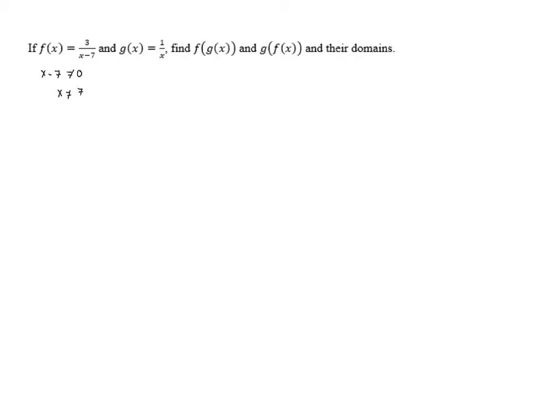For g of x, we need to make sure the denominator doesn't equal 0. In this case, the denominator is just x, so x is not equal to 0. Let's now look at the compositions of each, and then we can talk about the domains individually.